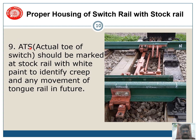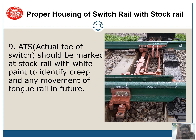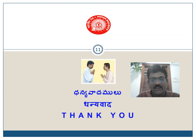The actual toe-off switch shall be marked at the stock rail with white paint. You can mark with white paint to identify creep or any other movement of the tongue rail in future. If the point goes out of square and the tongue rail moves away from the actual toe-off switch, you can easily know if there is any marking with white paint. These points shall be remembered for proper housing of stock rail with the tongue rail. Thank you.